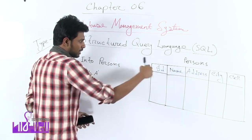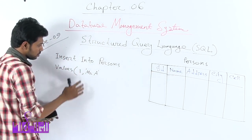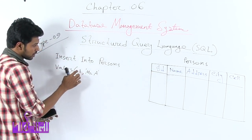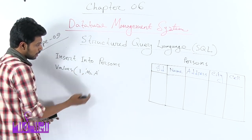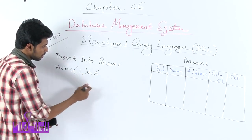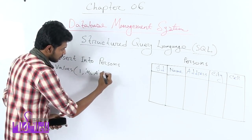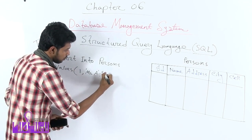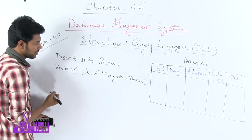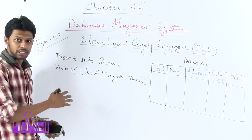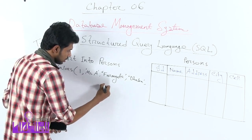Name value, suppose Mr. A — and for text type data, you have to put it inside single quotation marks. Name was text type, but ID was integer type data. For integer, you don't need single quotation marks, but for text type, you have to write it inside quotation marks. Next: address — suppose the address is Farmgate. Then city — city is Dhaka. Then cell number — cell number was number type, so for that, you don't need any quotation marks. I am writing the cell number: 016...